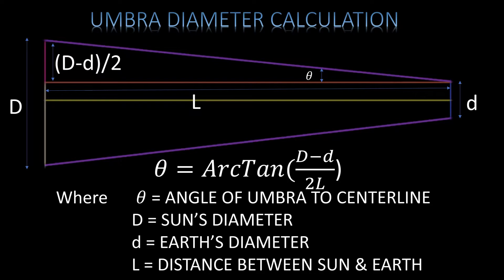Given the information of the earth-sun-moon system and the assumption that these are in a straight line, we can calculate theta, which is the angle of the umbra to the center line, as given in the formula. This is just an application of some basic trigonometry. Here, capital D is the sun's diameter and small d is the earth's diameter, with capital L being the distance between the two of them.